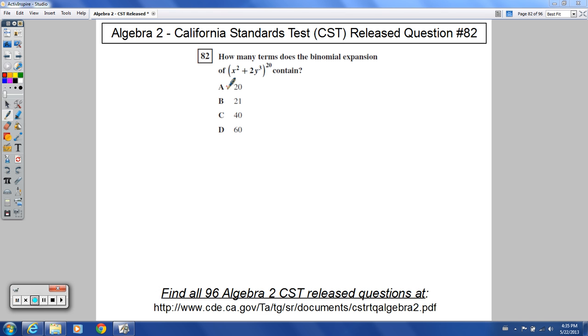Hello and welcome to release question number 82 for the CST Algebra 2 questions. It's asking this: how many terms does the binomial expansion of x squared plus 2y cubed to the 20th power contain? Oh my gosh, Mr. Wagner, what are you doing to us here?